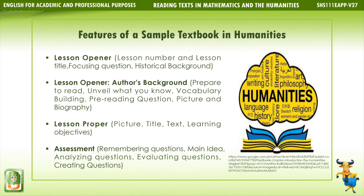Next, features of a sample textbook in humanities include: lesson opener; lesson number and lesson title; focusing question; historical background; author's background; prepare to read; unveil what you know; vocabulary building; pre-reading question; picture and biography; lesson proper; picture; title; text; learning objectives; assessment; remembering questions; main idea; analyzing questions; evaluating questions; and creating questions.